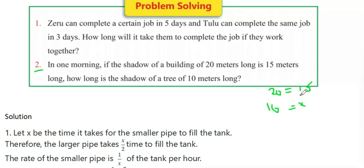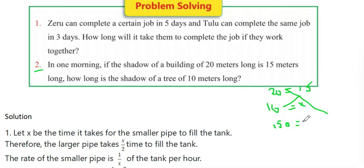Setting up the proportion: 10 times 15 equals 150, and 150 equals 20 times x. Dividing both sides by 20 gives x equals 150 divided by 20, which is 7.5.